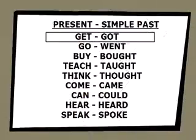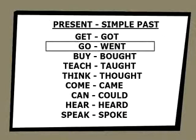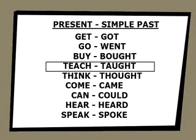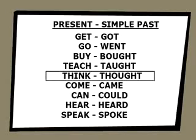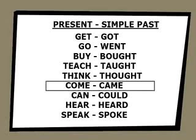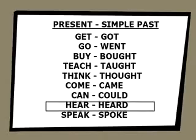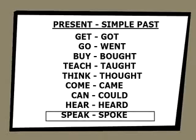Então vamos rever os verbos irregulares que mudam a sua forma no passado. Get — got. Go — went. Buy — bought. Teach — taught. Think — thought. Come — came. Could. Hear — heard. Speak — spoke. Qualquer dúvida, ask your teacher.